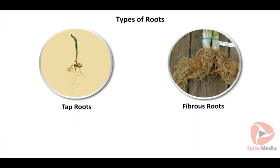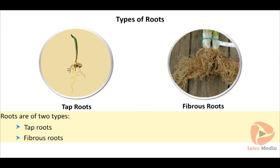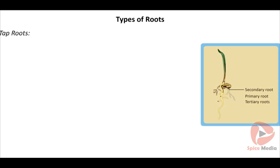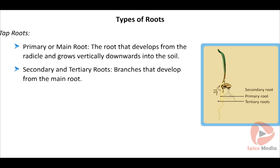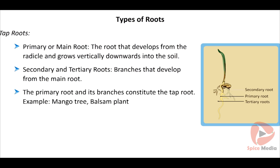Roots are of two types: taproot and fibrous root. The root that develops from the radicle and grows vertically towards the soil forms the main root. From the main root, other sub-branches arise, called secondary roots and tertiary roots. The primary root and its branches constitute the taproot system. Examples: mango tree, balsam plant.